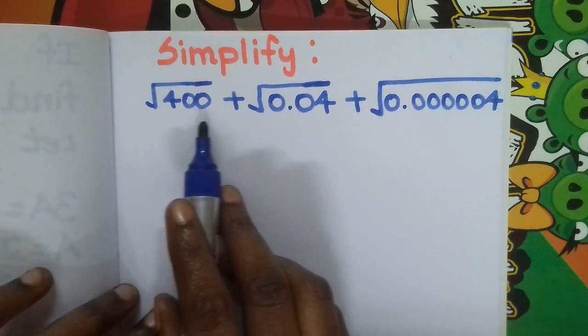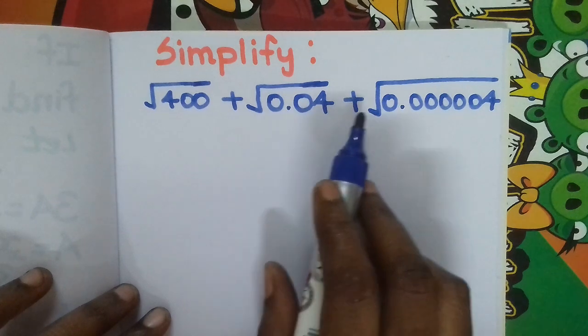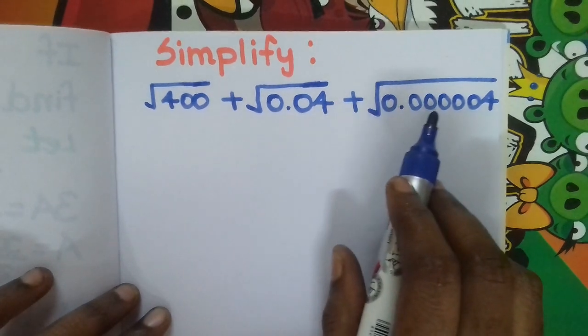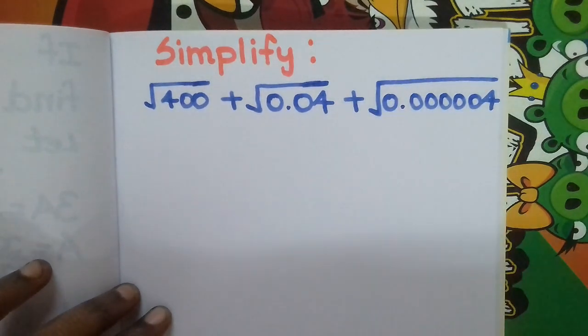Simplified: root 400 plus root 0.04 plus root of 0.00004.